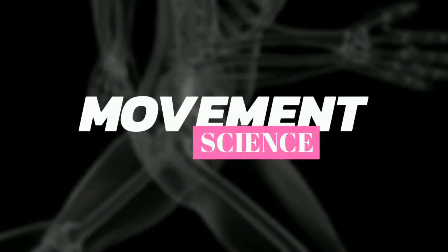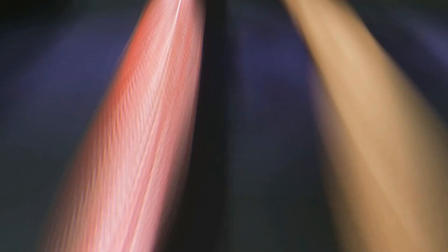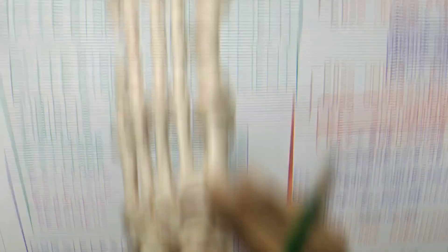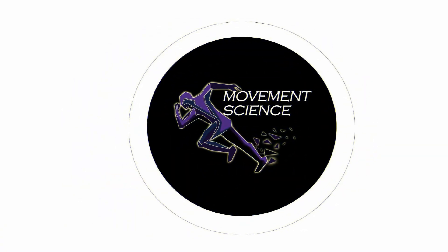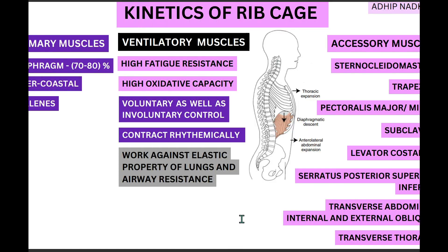So today we are focusing on kinetics of your ribcage — basically the muscles present around the ribcage. Before we go on to each specific muscle, let us first look at the ventilatory muscles in general. These muscles are present around your ribcage and they help us in breathing, and they have very specific features.